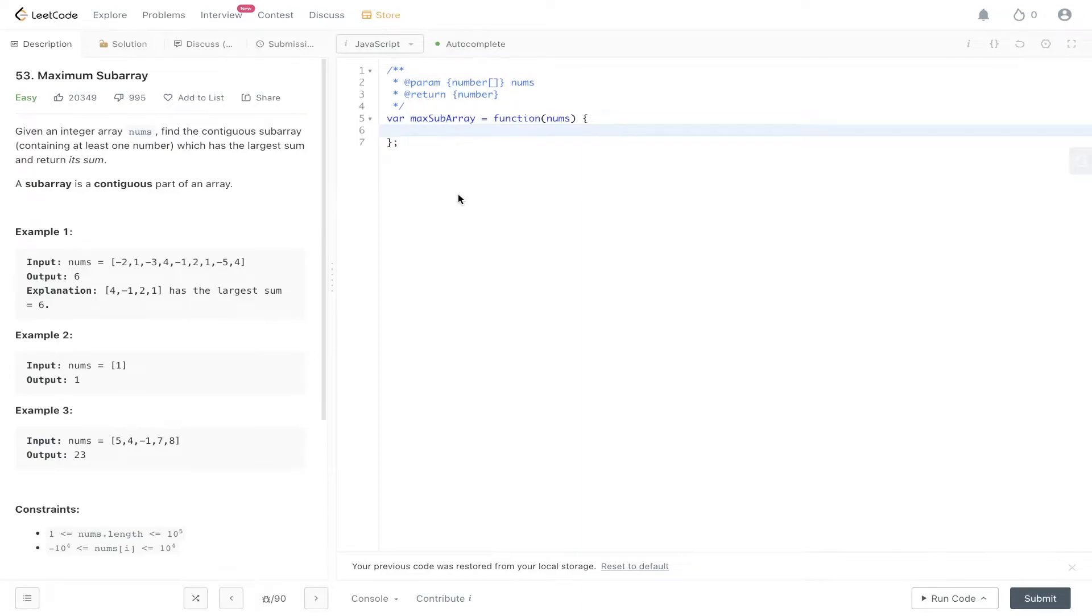Question 53 of LeetCode, maximum subarray. Given an integer array nums, find the contiguous subarray containing at least one number which has the largest sum and return its sum. A subarray is a contiguous part of an array.